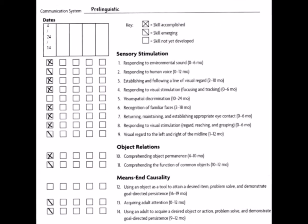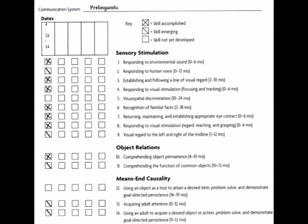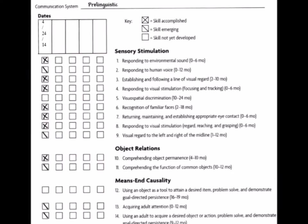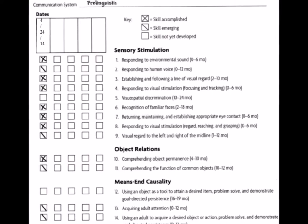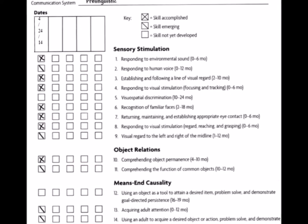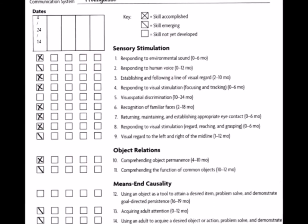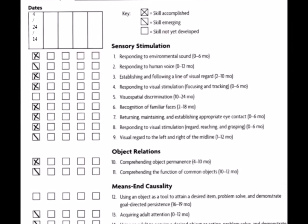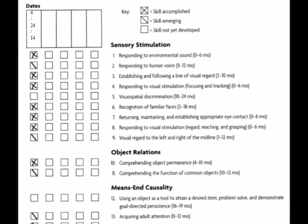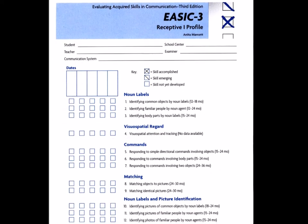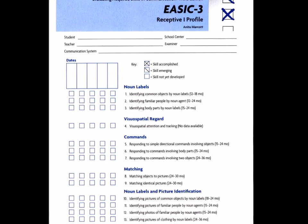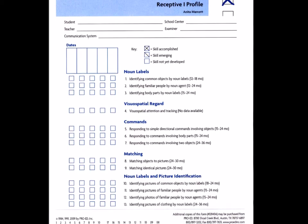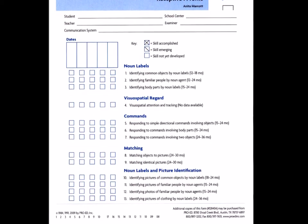After evaluating the student's performance, the examiner can indicate whether the skill is accomplished by inserting an X in the box, emerging by inserting a slash, or not yet developed by leaving the box blank. For a skill to be accomplished, the majority of responses must be spontaneous. For emerging, the majority are cued. For undeveloped, the majority are imitated or manipulated. The five profiles correspond to the five inventories, and skill accomplishment levels are transferred to the corresponding profile, which can record performance across five years or five consecutive assessments.